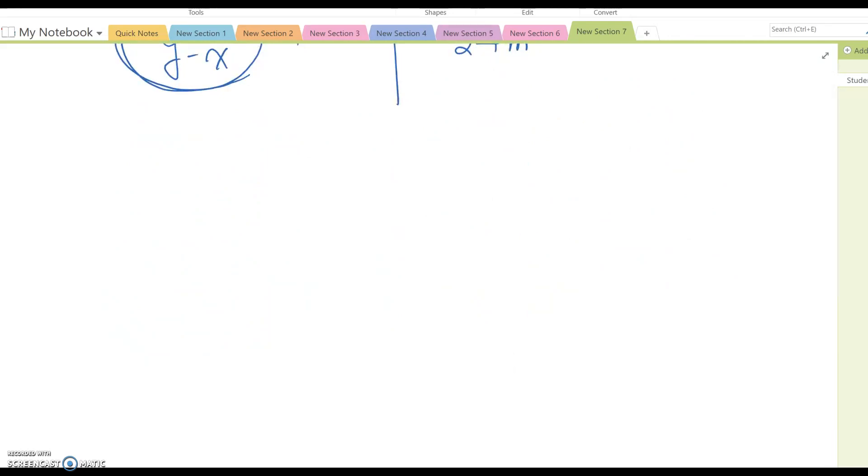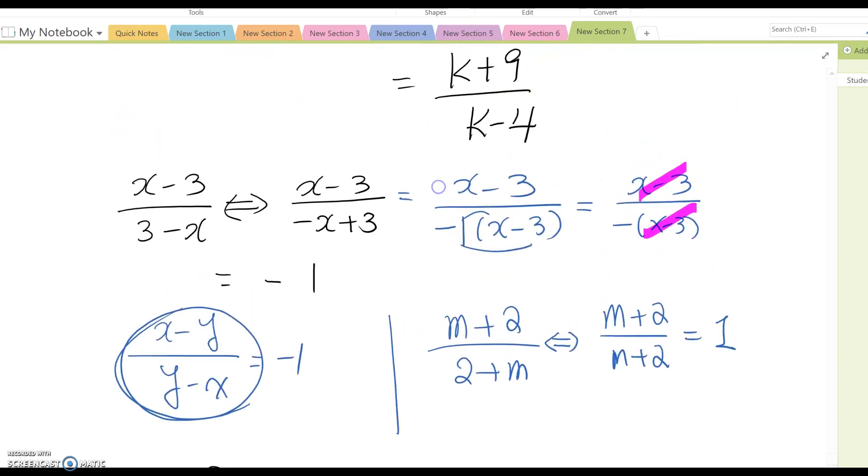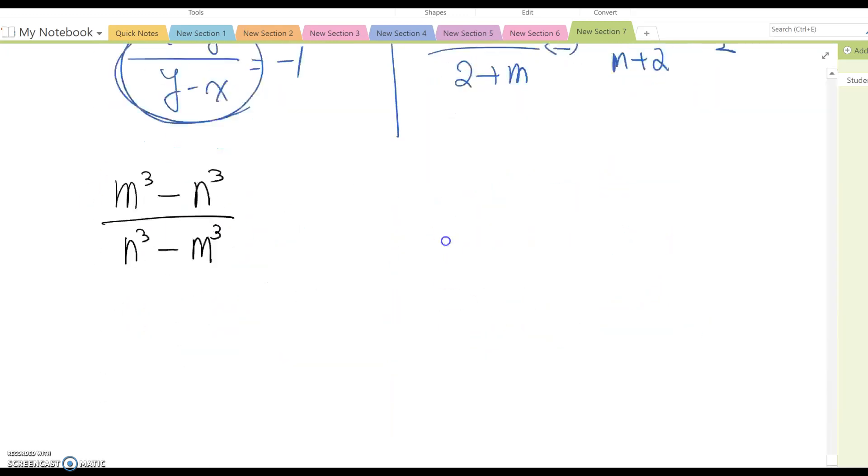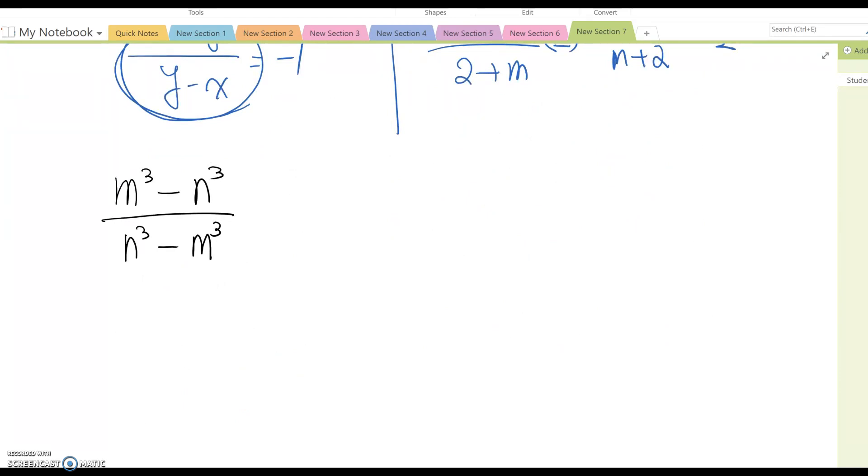This one is a harder question, so it requires more factoring. Look at this question: m cube minus n cube over n cube minus m cube. Unlike the previous question where they're all single power and prime factors, this one is not, so you still have to use factoring first.